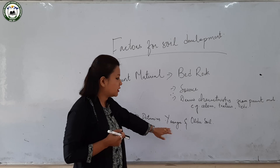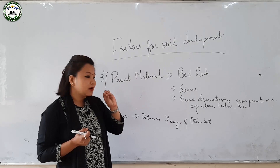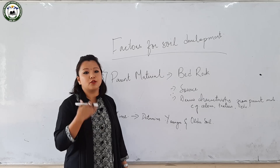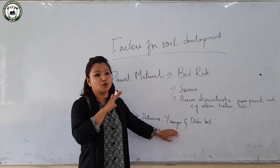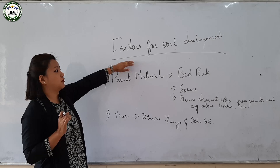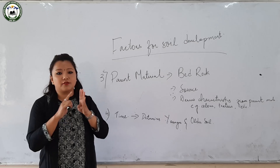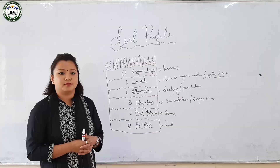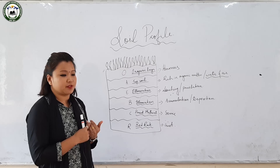Moving on to time as a factor: time determines whether the soil is younger or older. A well-developed soil is regarded as older soil. Older, well-developed soil has vertical layers or horizons that need several thousand years to develop. Younger soils have no vertical horizon or layer and erode away easily. Other factors include slope, topography, and gradient — you can incorporate these in your notes.